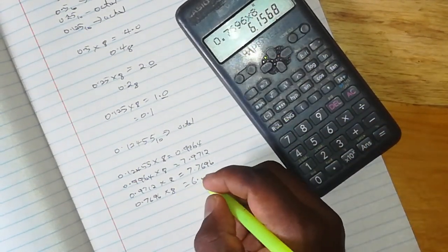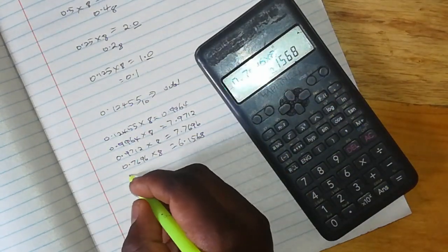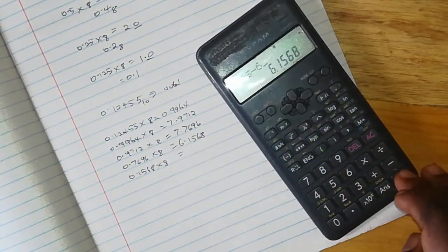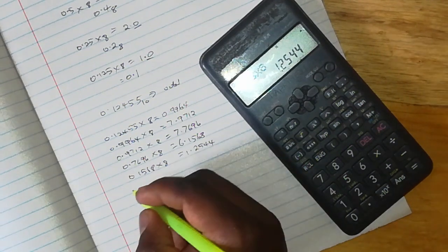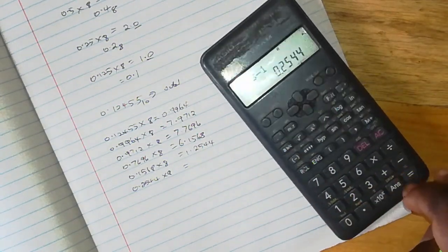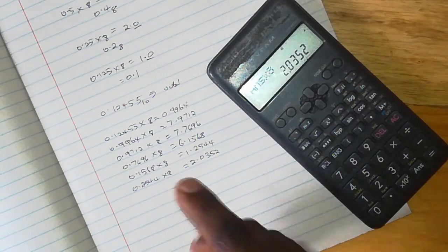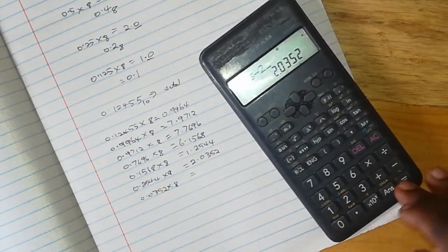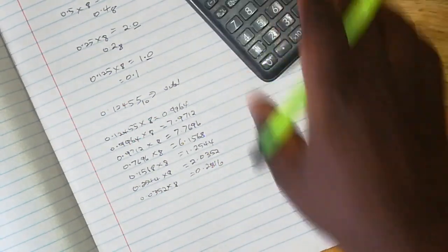0.1568 by 8 gives you 1.2544. 0.2544 by 8 will give you 2.0352. 0.0352 by 8 will give you 0.2816.